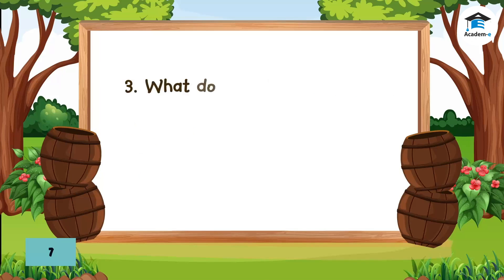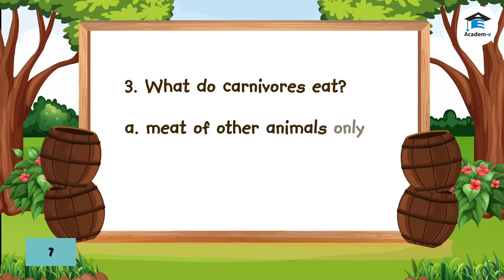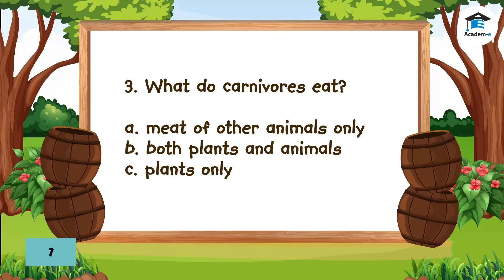Question 3: What do carnivores eat? A. Meat of other animals only. B. Both plants and animals. C. Plants only. The answer is A. Meat of other animals only.